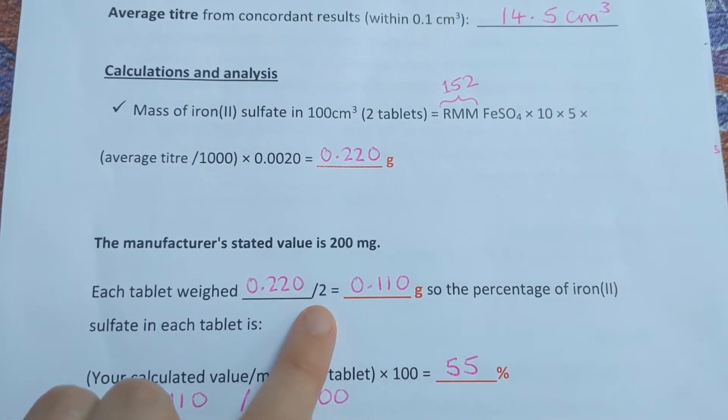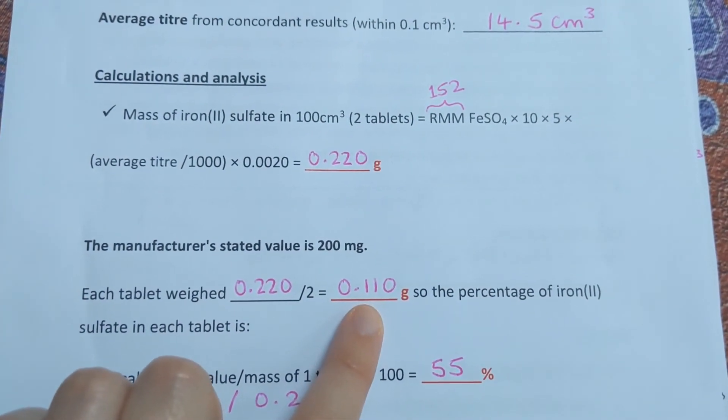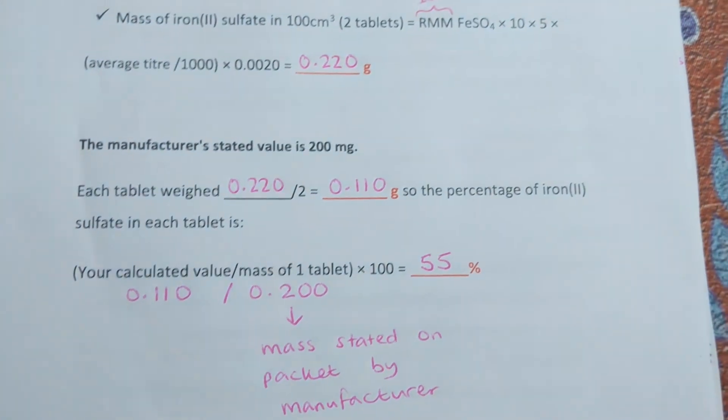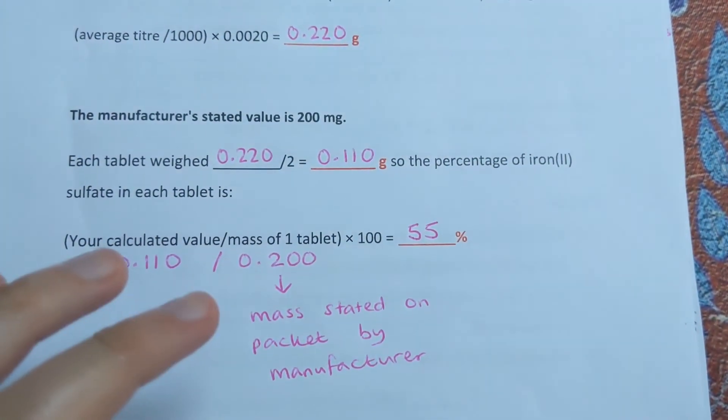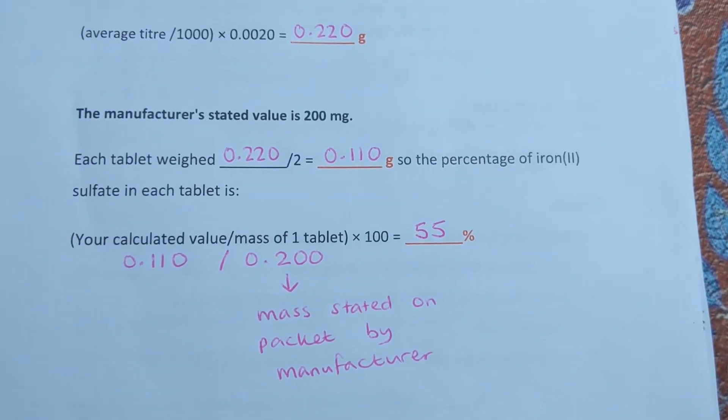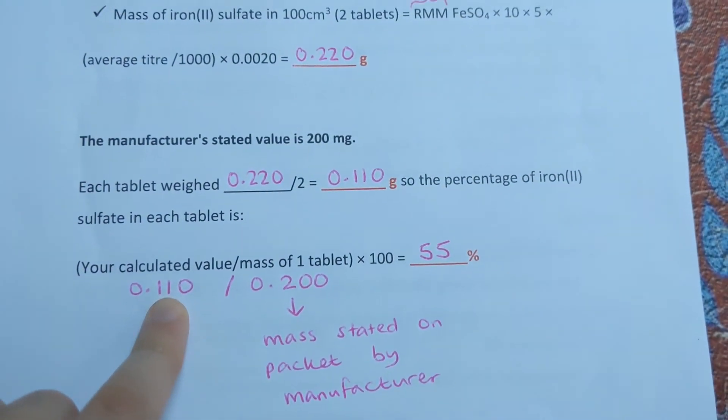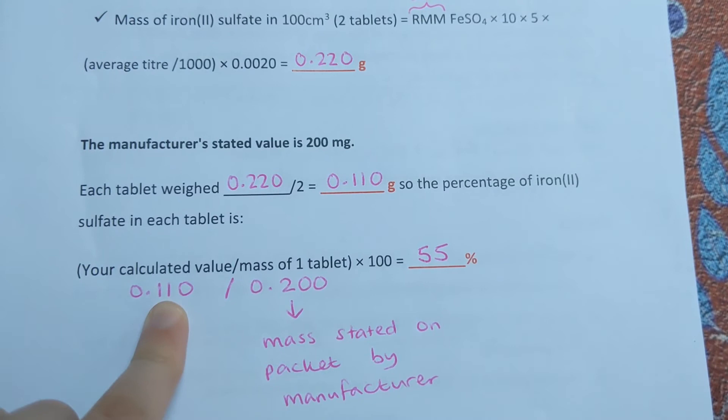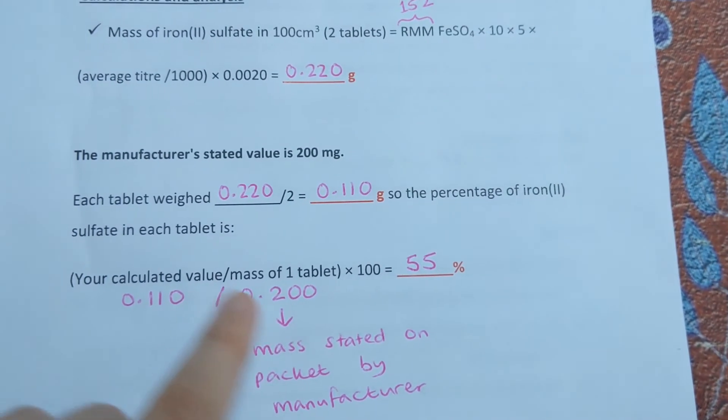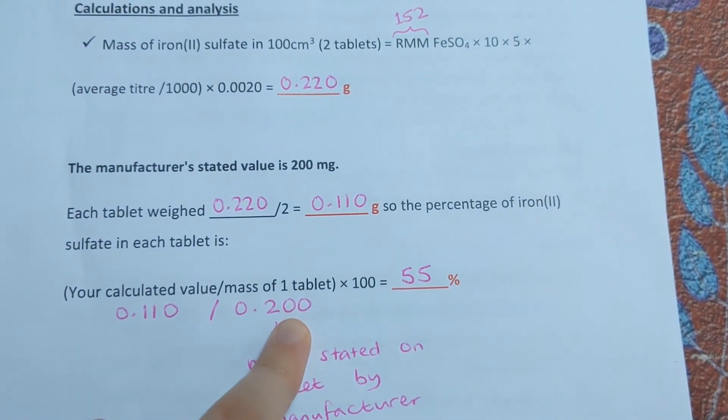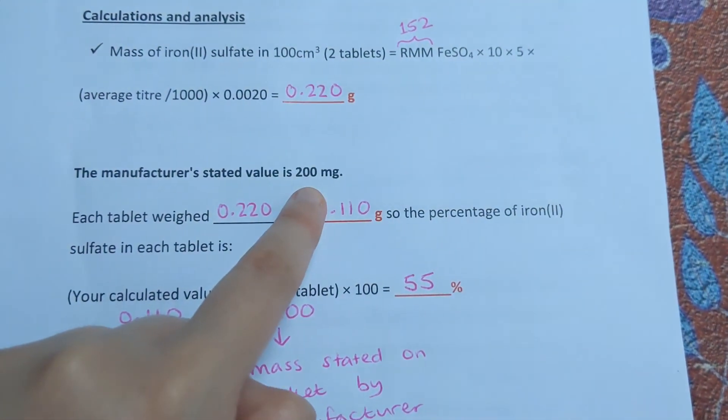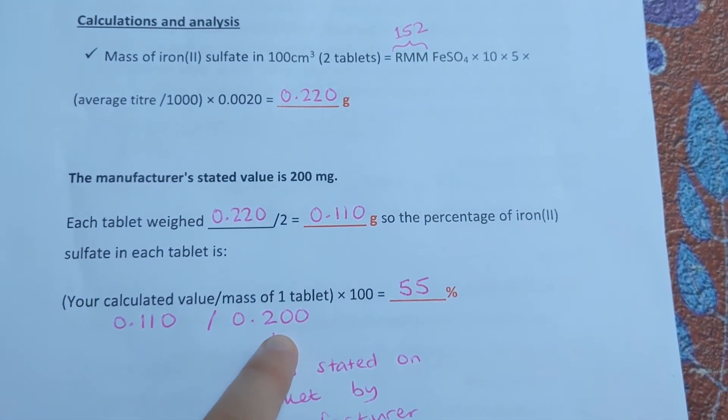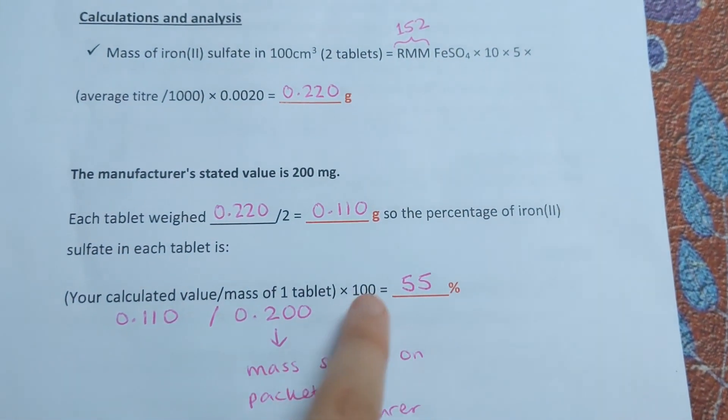We're going to express the percentage of iron in each tablet, so we do our calculated value—the mass of one tablet that we calculated—over the mass that the manufacturer says the tablet weighs. So 200 milligrams is 0.2 grams, we times that by 100 to get a percentage.